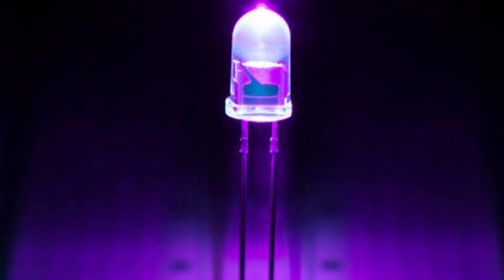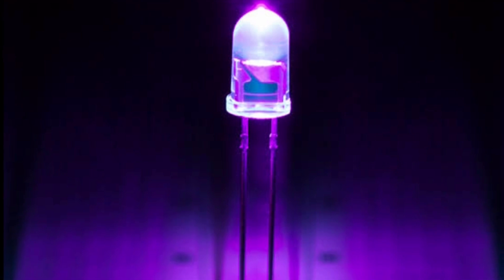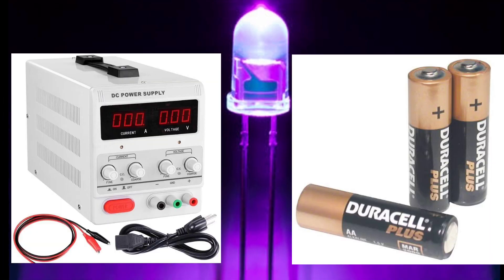It's a very simple circuit only requiring a UV LED, a resistor, and a power source. The power source can either be a DC power supply or 3 AA batteries.